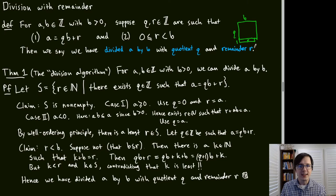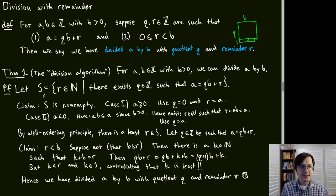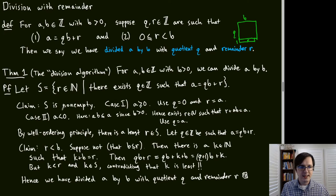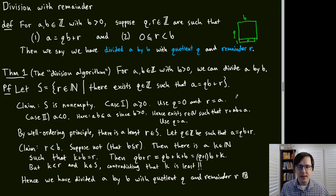There are two theorems: division can be carried out (the division algorithm), and it's unique. For existence, the proof uses the well-ordering principle. Let S be the set of natural numbers R such that there exists an integer Q with A = QB + R. S is non-empty: if A ≥ 0 use Q = 0, R = A; if A < 0 use Q = A.